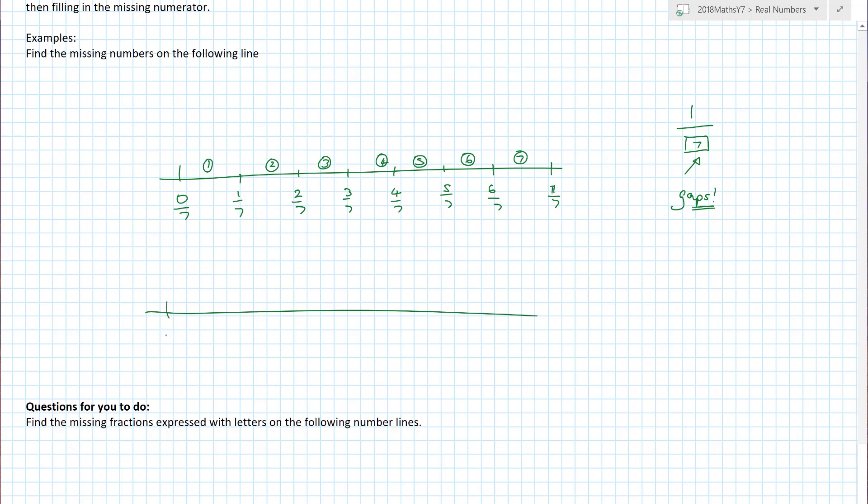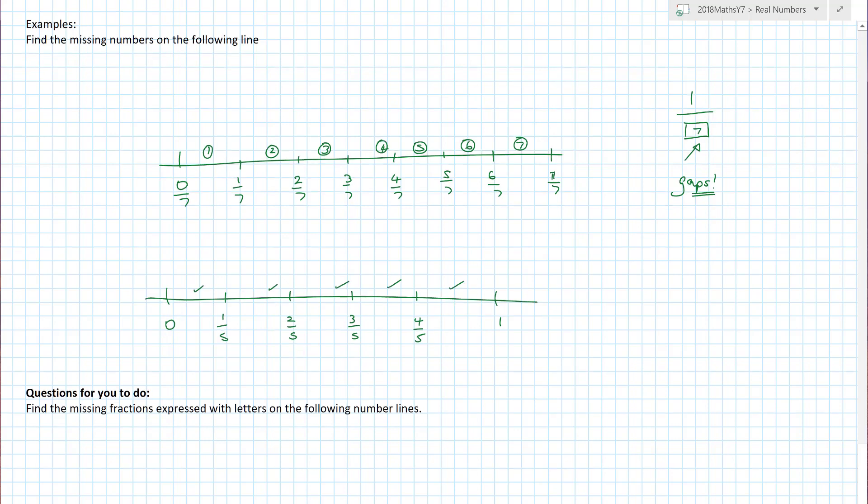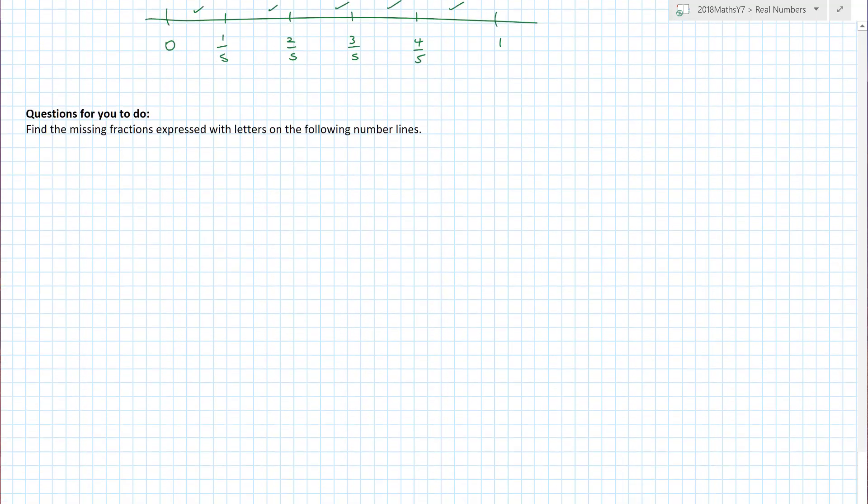What about this one? Zero and one, and we've got one. Hmm. How many gaps have we got? One, two, three, four, five. One, two, three, four, five. They must be fifths. One fifth, two fifths, three fifths, four fifths. And I'm pretty much done. So long as I can count the gaps, I should know what they've been split into.